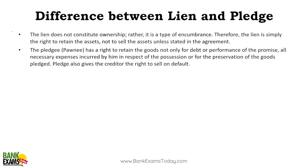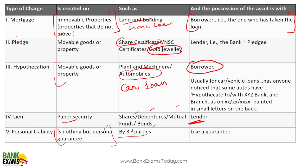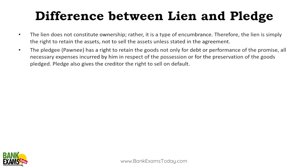Regarding the difference between lien and pledge: both involve movable property and both have the lender in possession, but there is one fine difference. Lien does not constitute ownership — it is a type of encumbrance. Lien is simply a right to retain the asset, not to sell. In pledge, the lender can sell the security; in lien, the lender cannot.